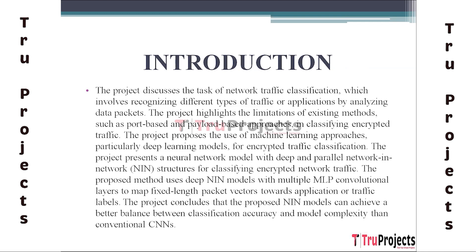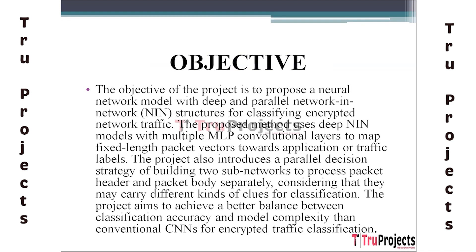For identifying encrypted network traffic, the project offers a neural network model with deep and parallel network in network (NIN) architecture. The suggested method maps fixed-length packet vectors to application or traffic labels using deep NIN models with several MLP convolutional layers. The project's findings show that compared to standard CNN, the suggested NIN models can achieve a superior balance between classification accuracy and model complexity.